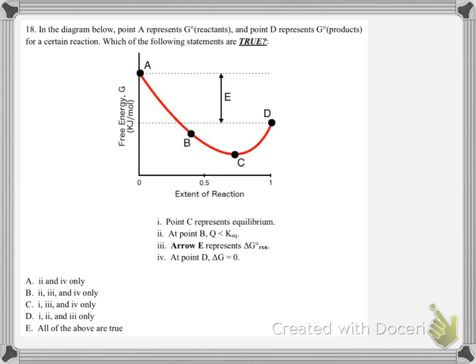We're picking what's true. The first option says point C represents equilibrium. Equilibrium is going to be when we have the lowest energy, and so that is going to be point C — that one checks out. The valley, or the bottom of that valley, is always going to be equilibrium. You can think of it as the happy valley if you'd like.